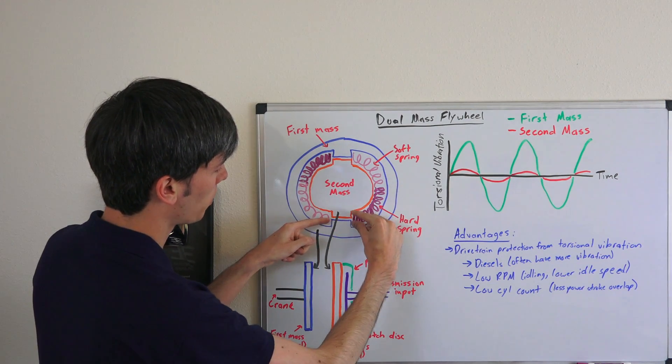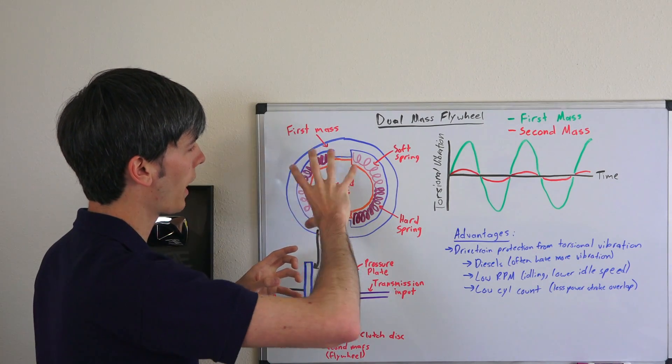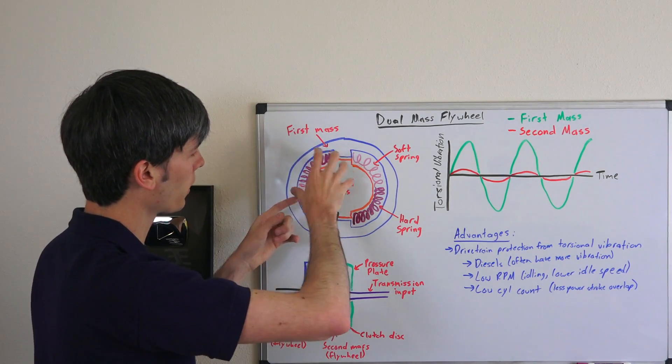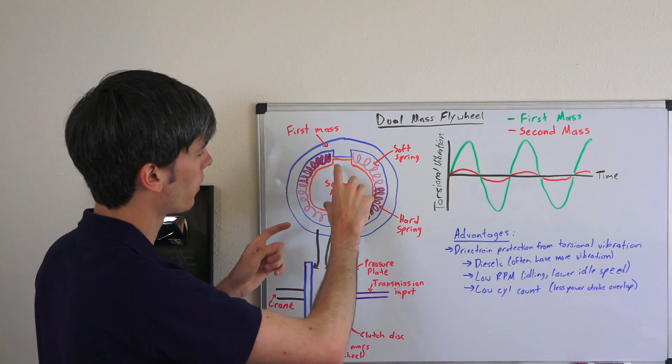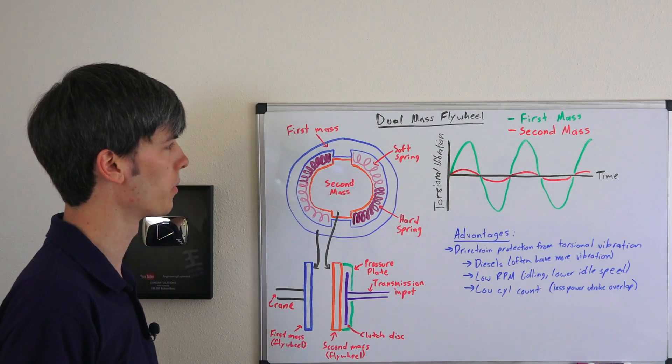As this first mass starts to rotate it's going to start compressing this spring, and that spring will start pushing on the second mass and force it to start rotating. But as it gets these pulses, these springs are going to balance that out so that the second mass doesn't vibrate quite as much and that vibration doesn't reach the transmission.